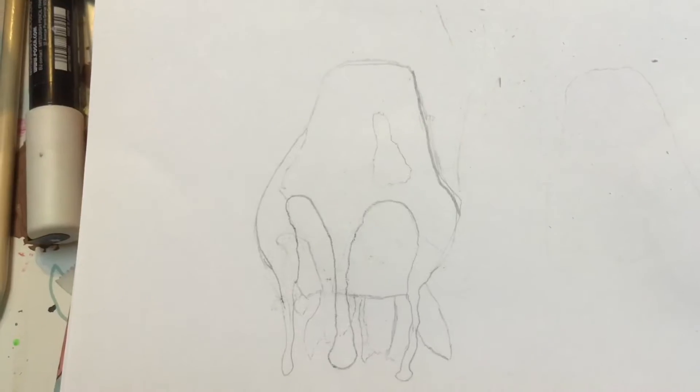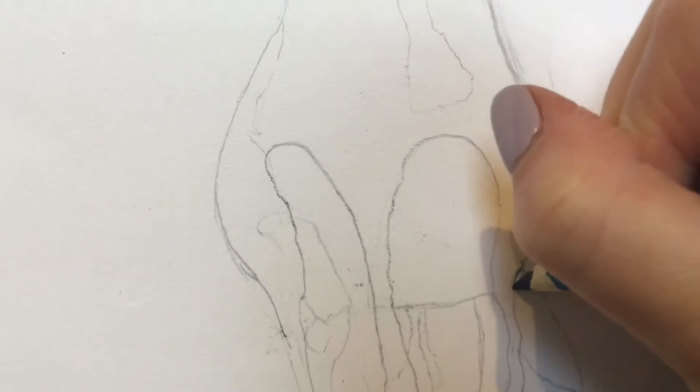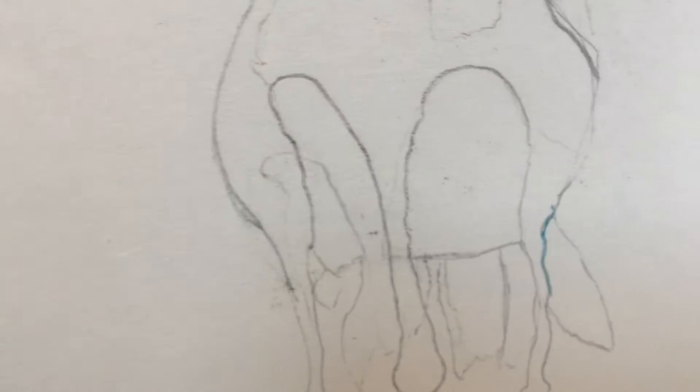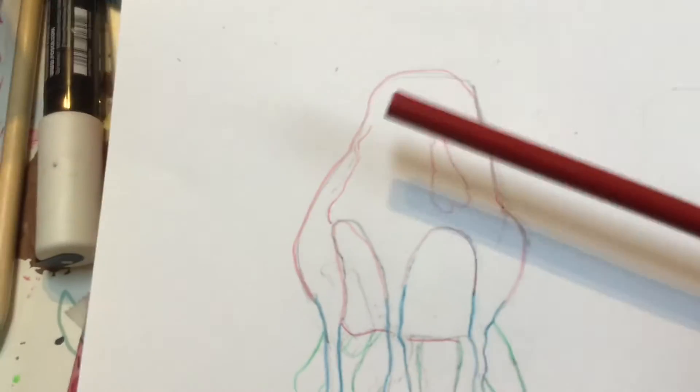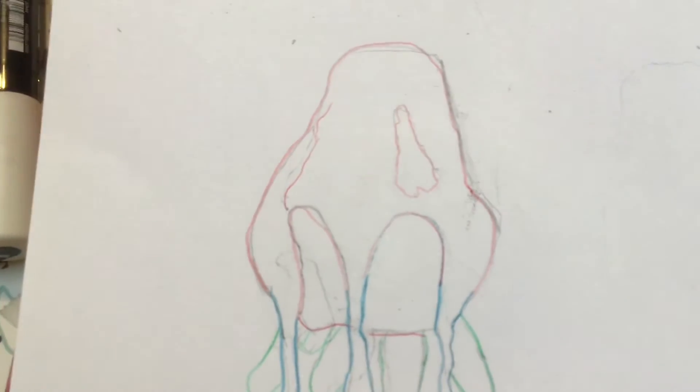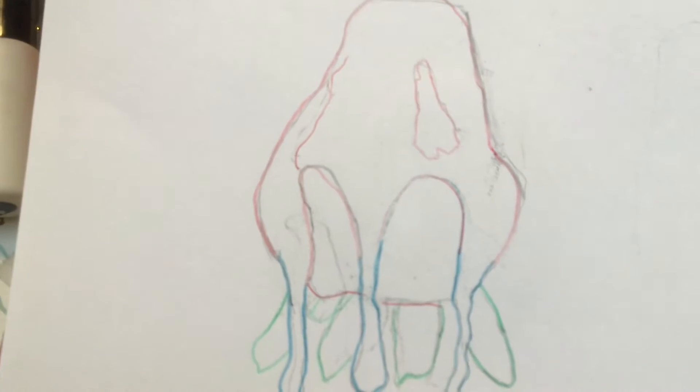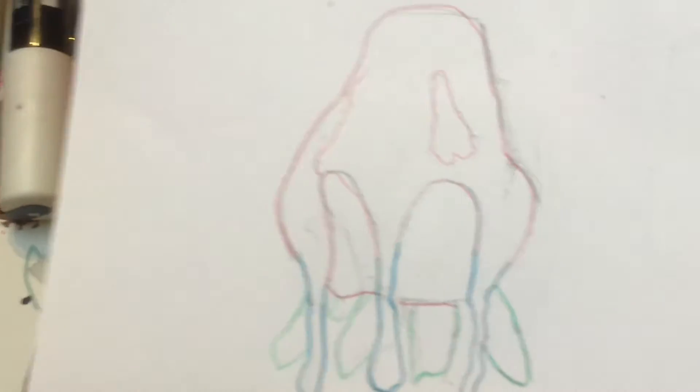So I'm starting off with a sketch with a pencil. This is what it looks like. Then I'm tracing the drips with a blue pencil crayon. Then I did red. I traced the strawberry in red. I traced the leaves in green and the drips in blue.